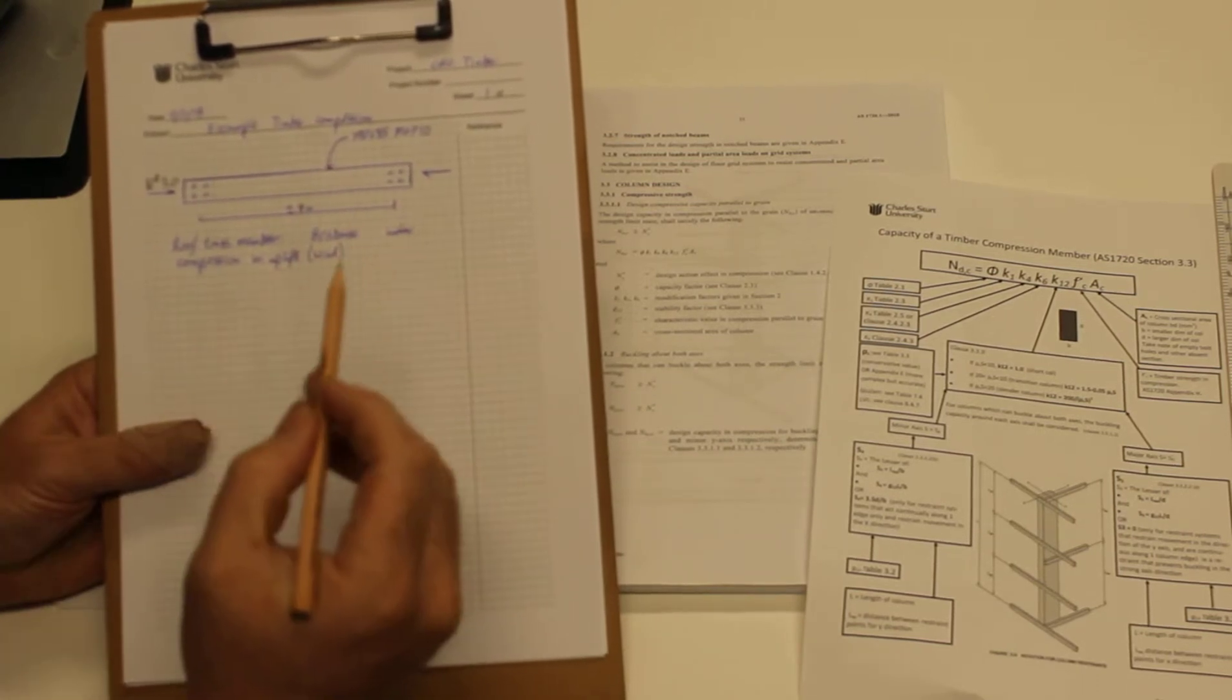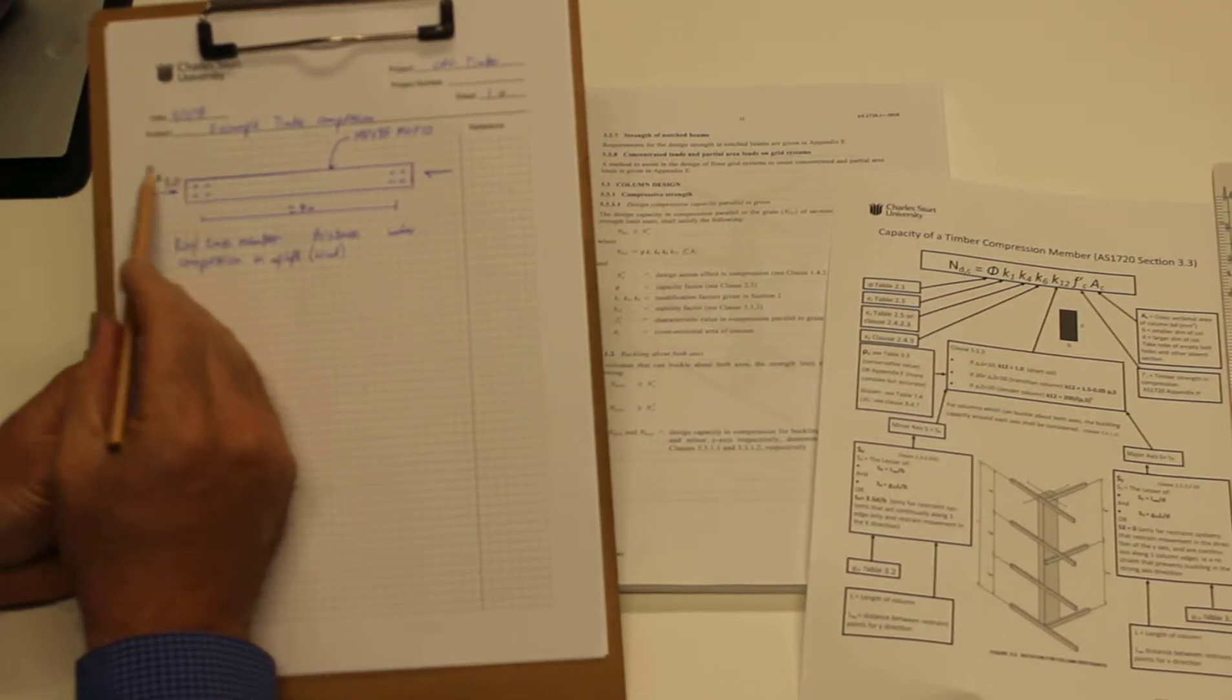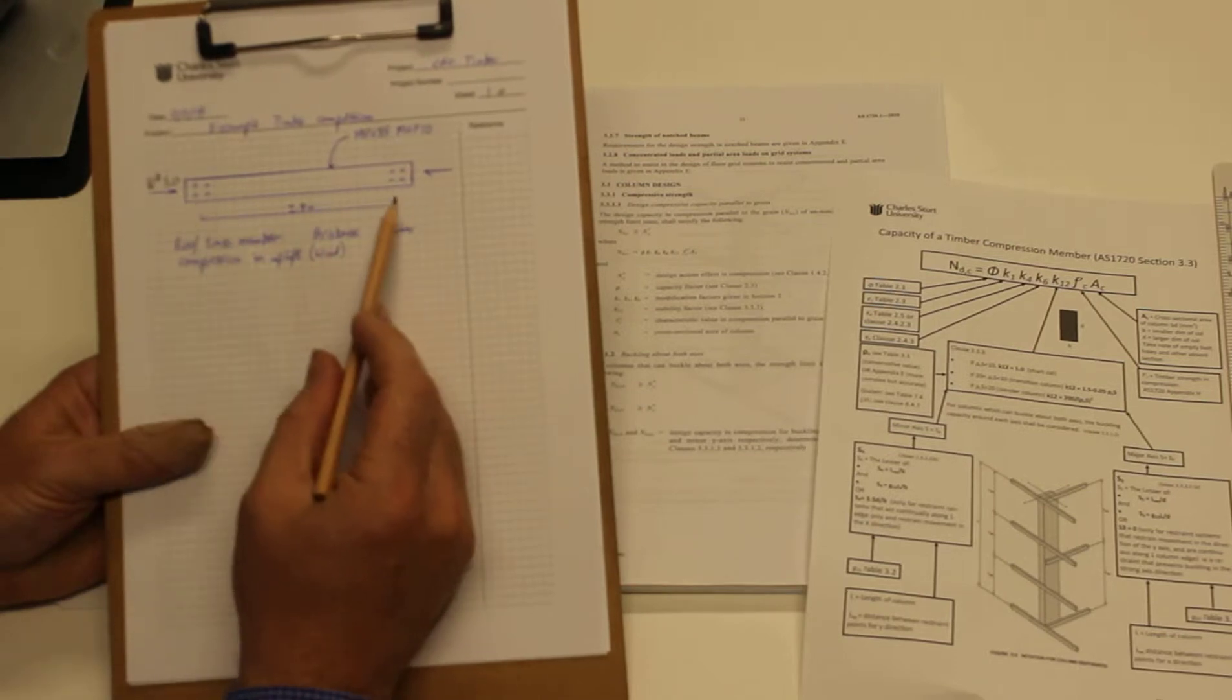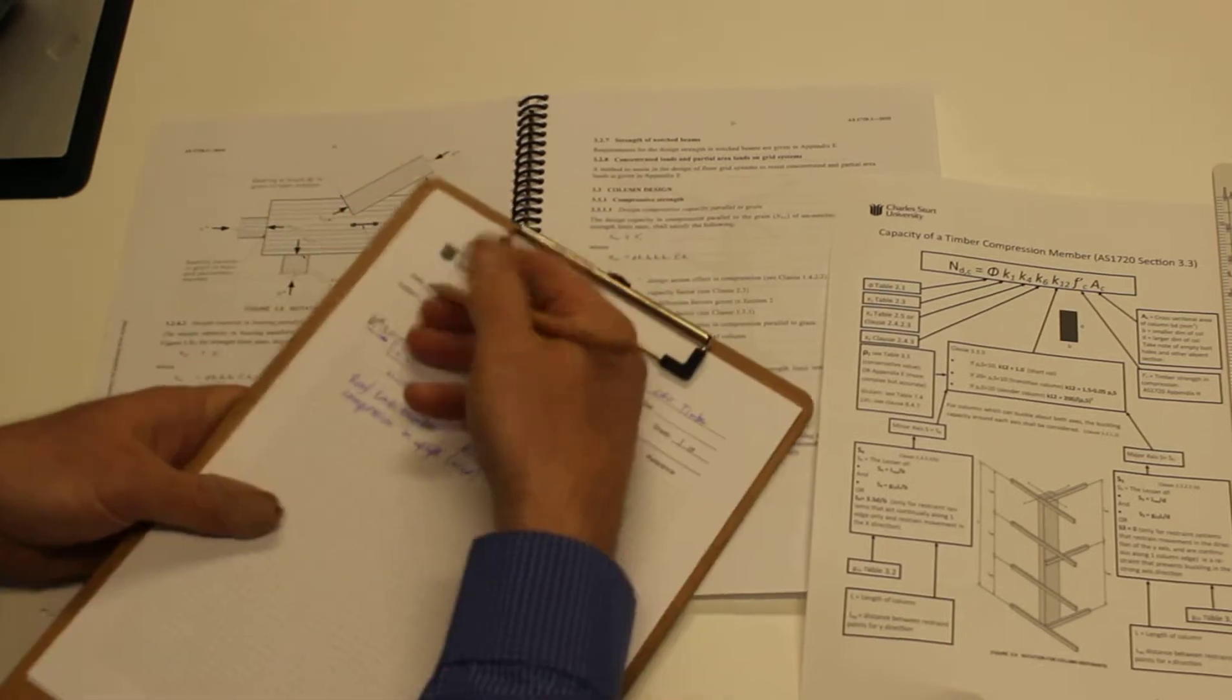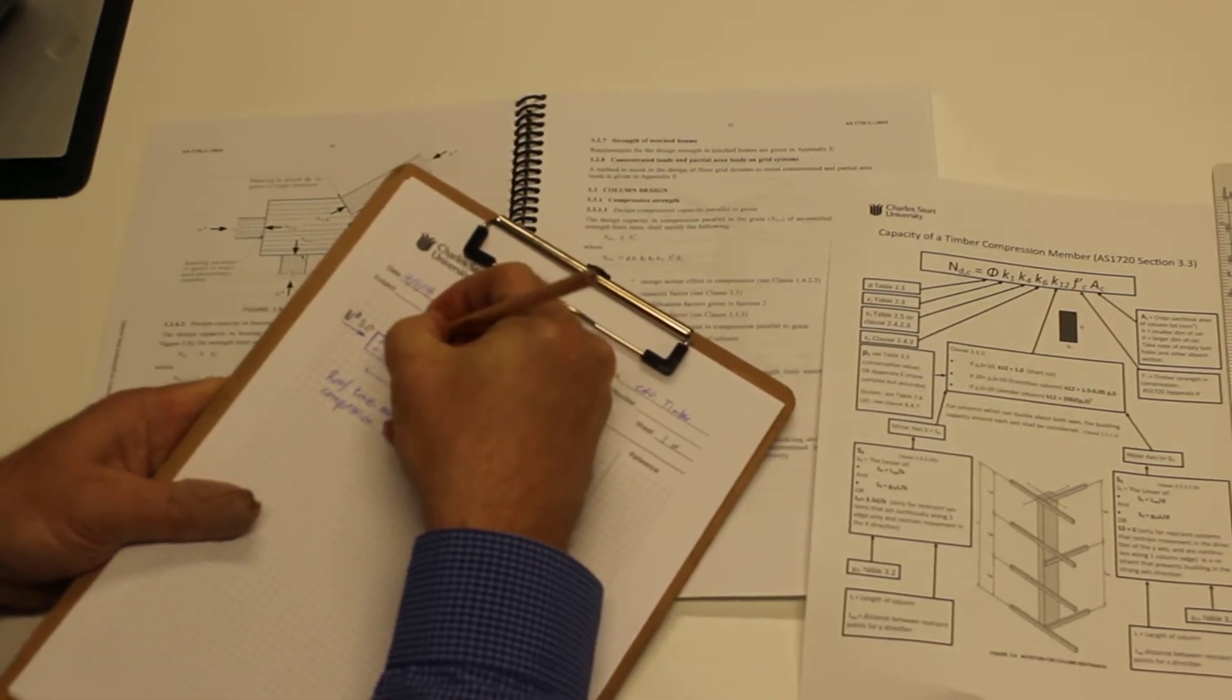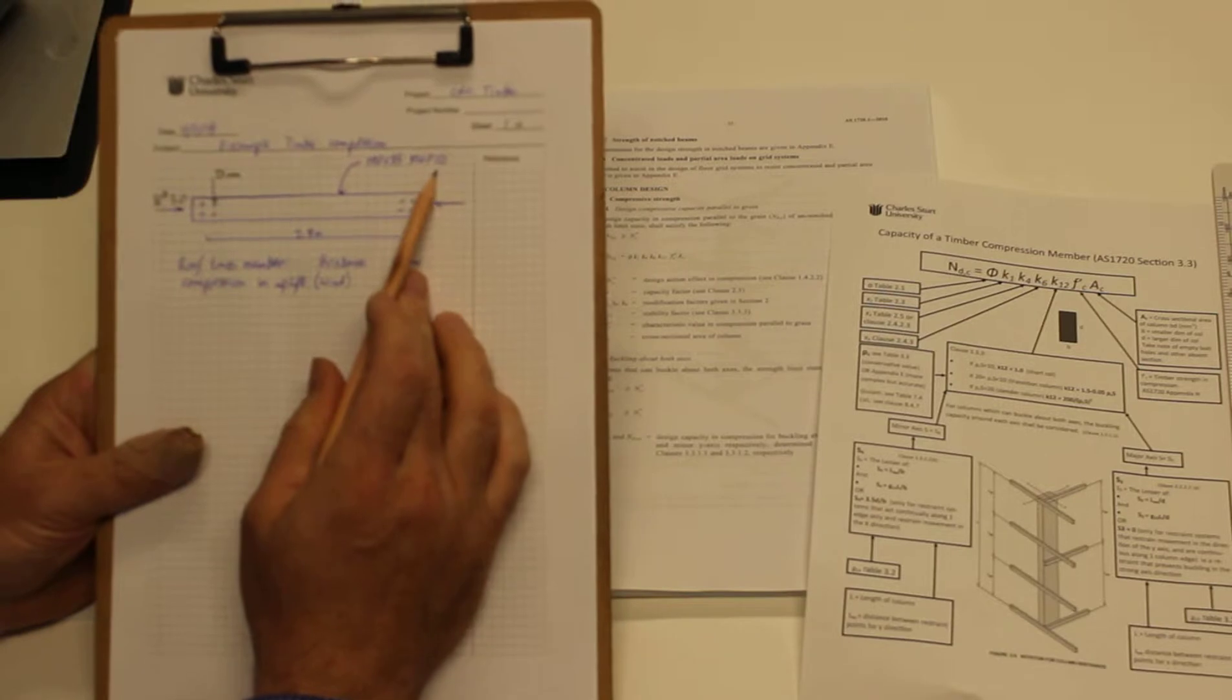It's located in Brisbane, it's indoors, and the design load we have on it is 3 kilonewtons. The member is 2.8 meters long between the bolted end connections, and these bolt holes are 22 millimeter diameter. We're going to make it out of a 190 by 35 machine graded pine 10.